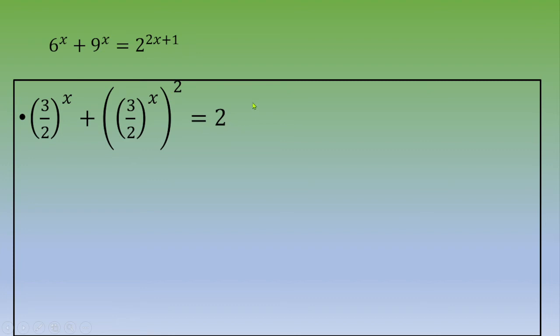Then you do a change of variables: capital X equals 3 over 2 power x. So you transform this equation into capital X plus capital X squared equals 2.